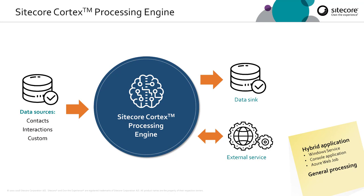Considering the Cortex processing engine, this is now a hybrid application — it's not a full XM instance as we've been used to. Being a hybrid application, it can run as a Windows service when deployed on-prem. It can also run as a console application when doing development work or demo. It also runs as an Azure web job when running in Azure. But above all, it's no longer only concerned with processing interactions for aggregation — it is now a general processing engine.